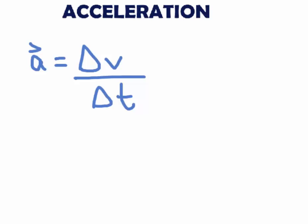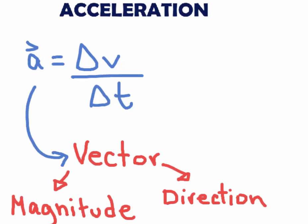Acceleration is the change in velocity over the change in time. It is defined as a vector which means it has a magnitude and a direction.